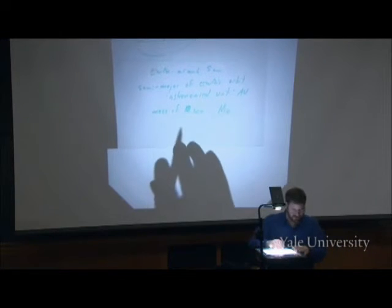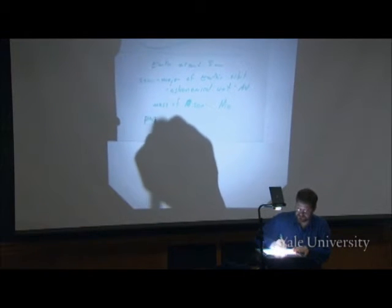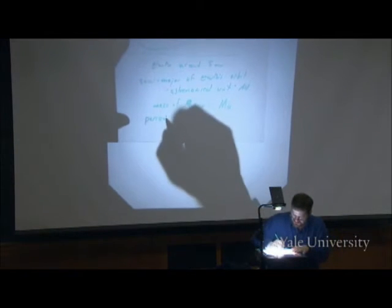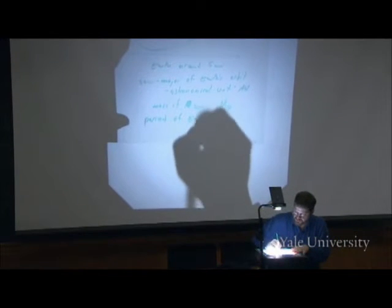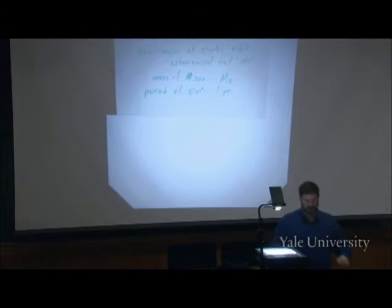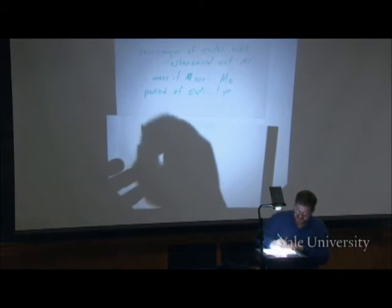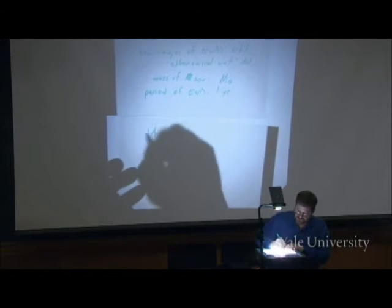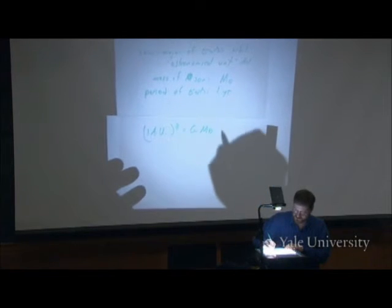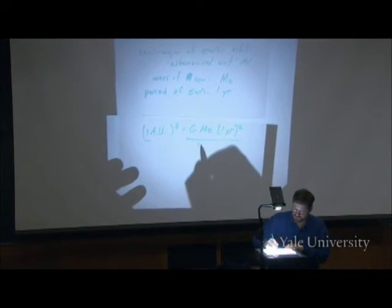And what's the orbital period of the Earth? A year, thank you very much. A period of Earth. One year. That's what a year means. It takes a year for the Earth to go around the Sun. So it must be the case that 1 AU³ = G × mass of the Sun × (1 year)² / 4π².